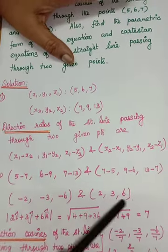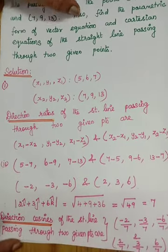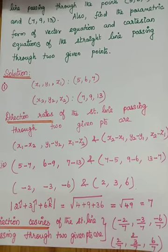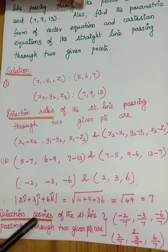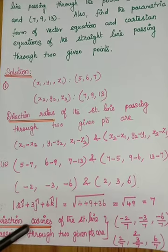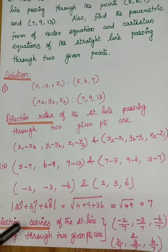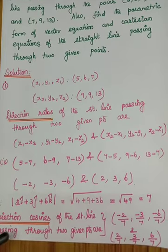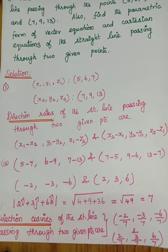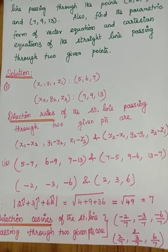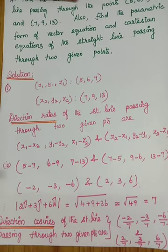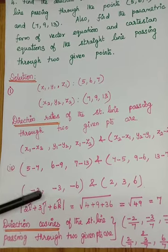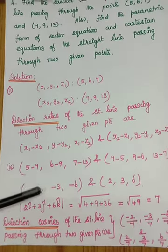You will get (minus 2, minus 3, minus 6) and (2, 3, 6). These are the direction ratios of the straight line passing through the two given points. Now, what is asked? Direction cosines. The direction cosine formula is x/r, y/r, and z/r, where r is the modulus of the vector whose direction cosines are to be found.